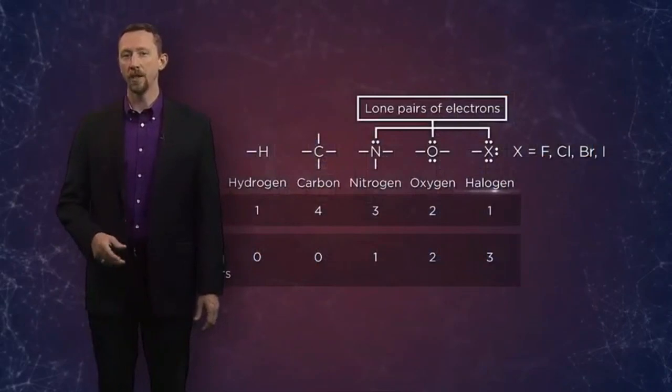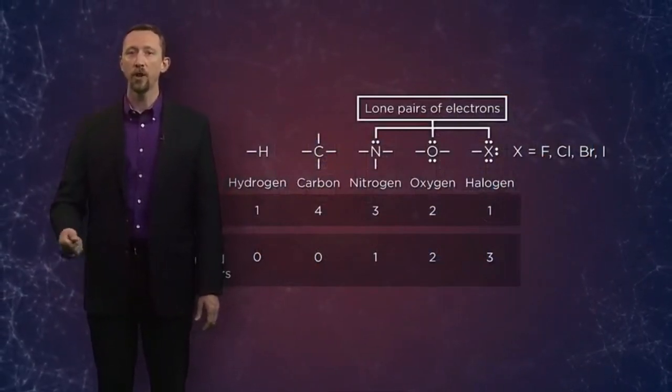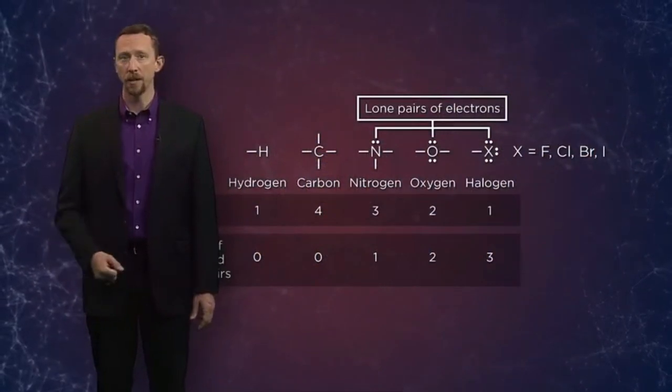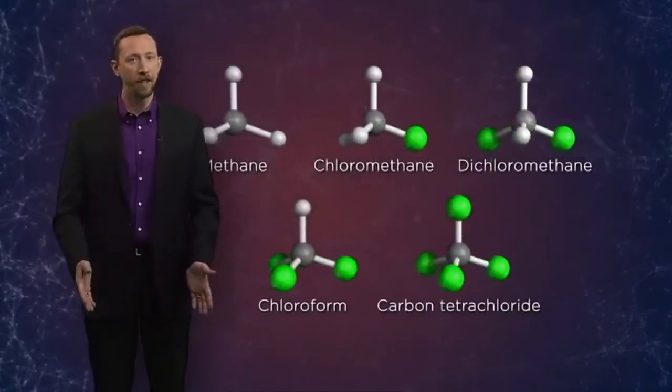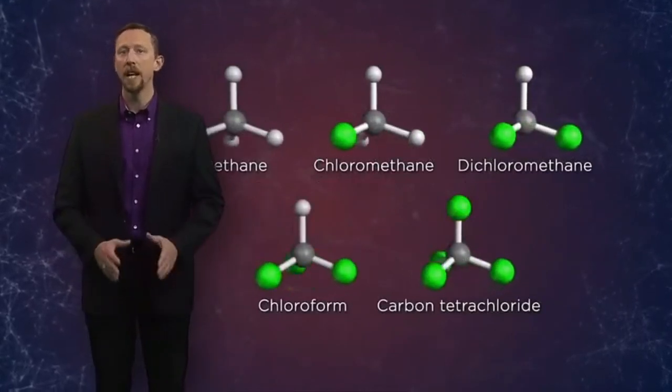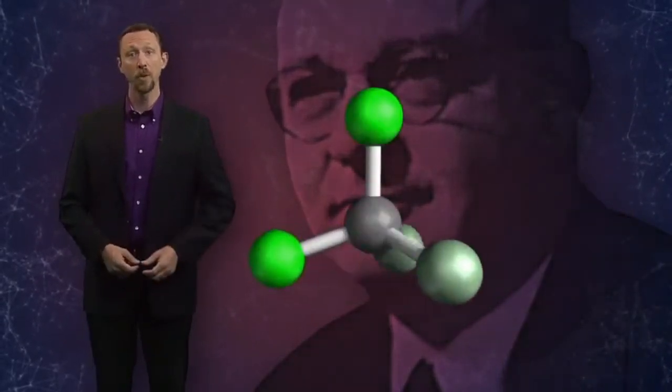When we focused on halogens, we noted that they only tend to form one bond, so they terminate chains just like hydrogen. However, we also saw how their high electronegativities and large electron clouds can dramatically change their physical properties. A fact that Thomas Midgley exploited in the development of Freon 12.